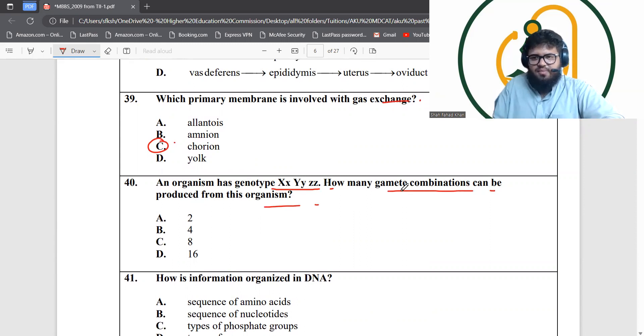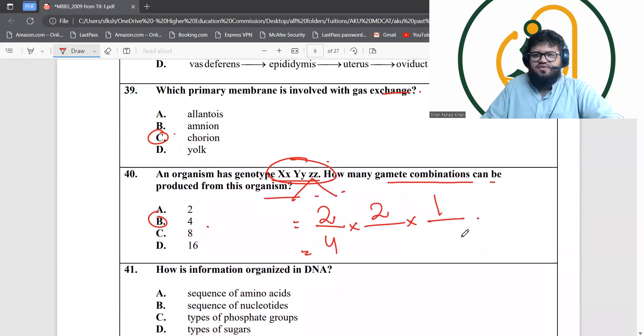An organism has this genotype, how many gamete combinations are produced? Remember, gamete will be half. In the first one, one can come from the Xs, so you have two options because one is big X and one is small x. In the second one, one can come from the other one, so again two options, capital Y and small y. But in the third one you can only have a small z because both are small z. Two times two is four, four combinations are possible. This completes our second ten questions of biology. That's it for this video guys, I'll see you in the next video with the next ten questions. Thanks.